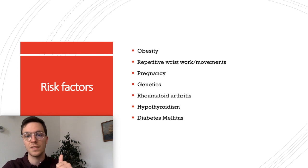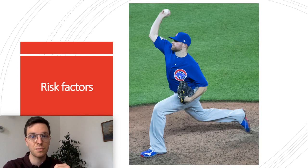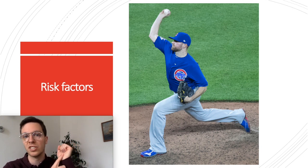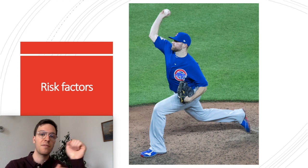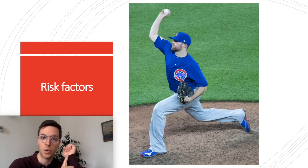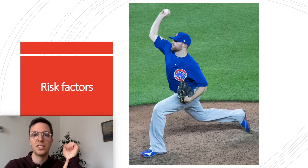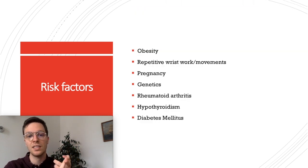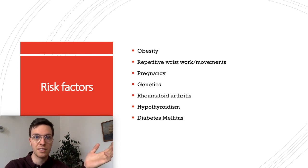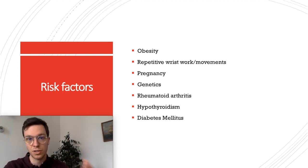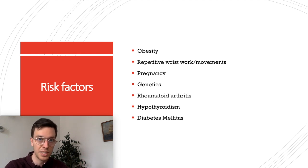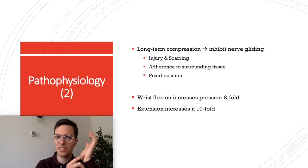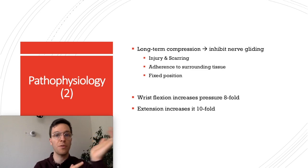An obvious risk factor is obesity. Another is repetitive wrist work or movements, because every time you flex or extend your wrist the pressure inside the carpal tunnel increases, and therefore the pressure on your median nerve as well — so any jobs with high repetition of wrist movement may lead to CTS long-term. Other risk factors include pregnancy, genetics (if your parent had CTS you're more likely to have it yourself), rheumatoid arthritis, hypothyroidism, and diabetes mellitus. Any of these risk factors may lead to long-term compression of your median nerve.